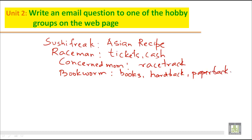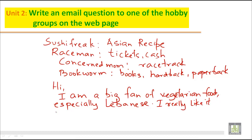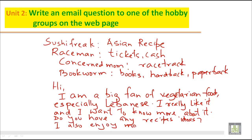Now suppose you want to write an email to a hobby group like Sushi Freak. How will you write? You can say 'Hi.' Because you are writing to a group whom you don't know, you can say: 'I am a big fan of vegetarian food. I am especially a big fan of Lebanese food. I really like it and I want to know more about it. Do you have any recipes or ideas? I also enjoy making desserts.'